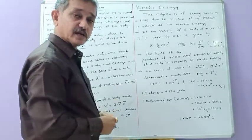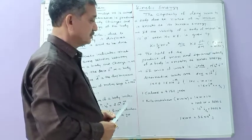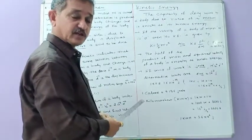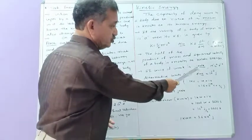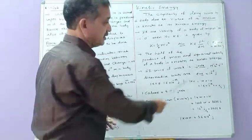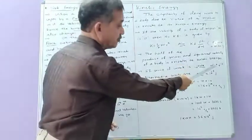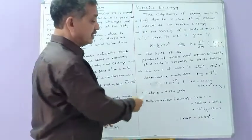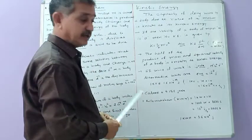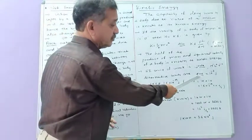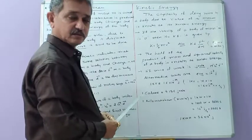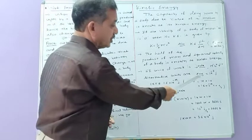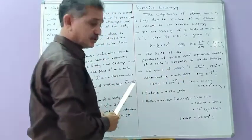As we have seen earlier, the work done by constant force. The unit of work is joule. The dimensional equation is F into d, giving you M¹L²T⁻². In the CGS system, the unit of work is erg, and 1 joule equals 10⁷ erg, so 1 erg equals 10⁻⁷ joule.